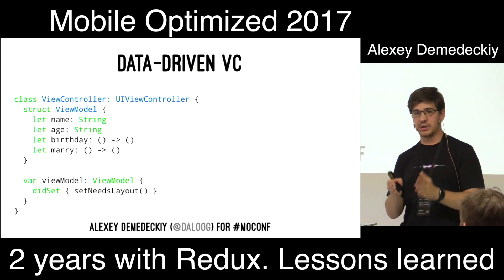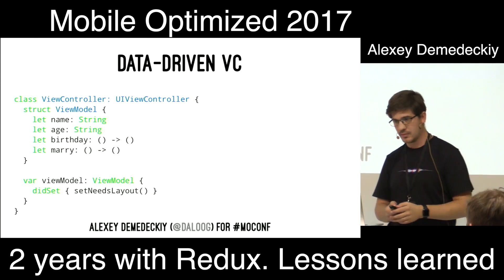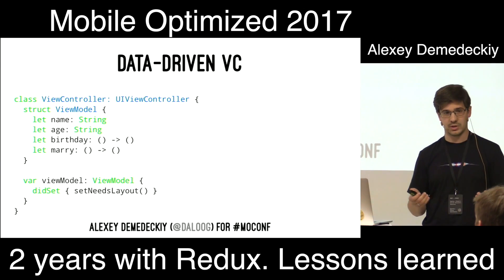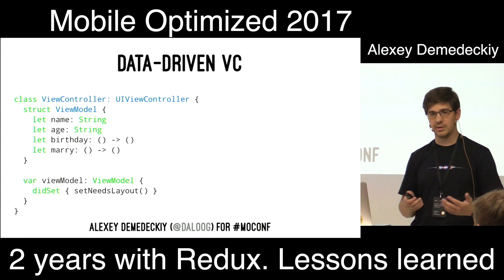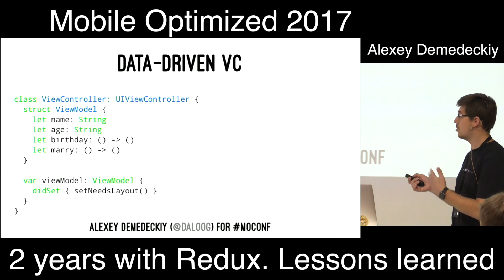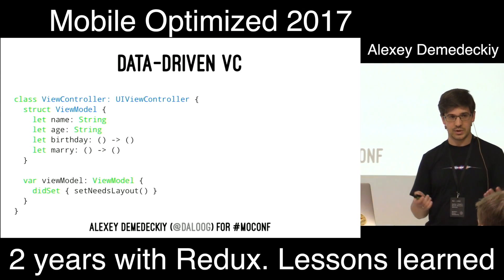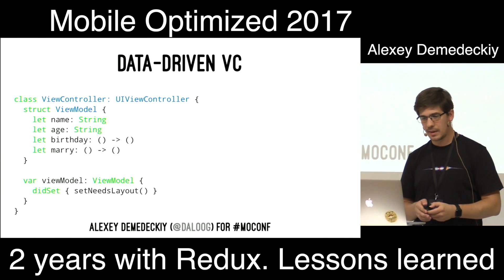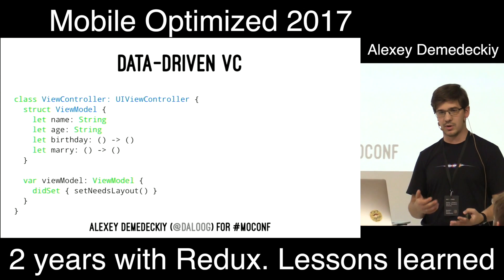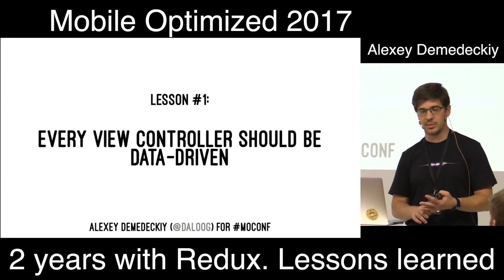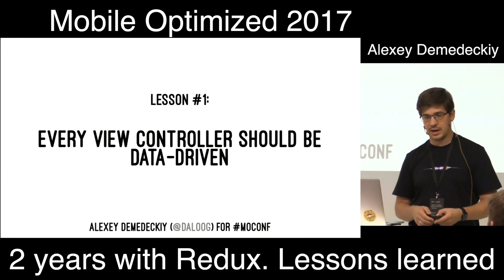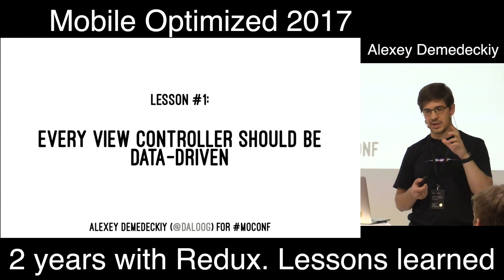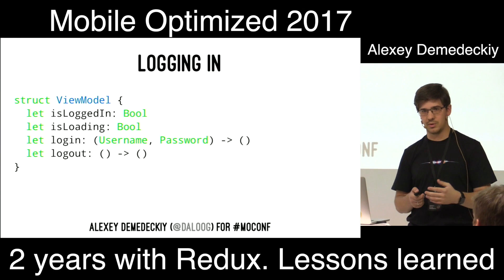This creates strong decoupling between the view layer and your model layer. For example, it allows you to render any view controller of your application with any view model without the whole application itself — you can just instantiate a view controller, render it with a random view model without connection to services, and look at your UI. It's a short feedback loop and big benefits. This approach does not require any framework adoption — it's just one single rule: every view controller should be data-driven.